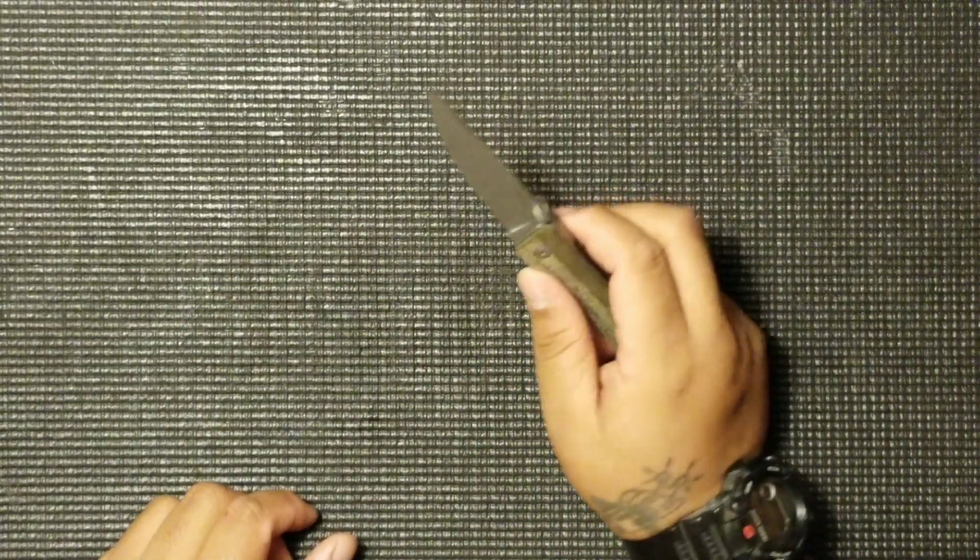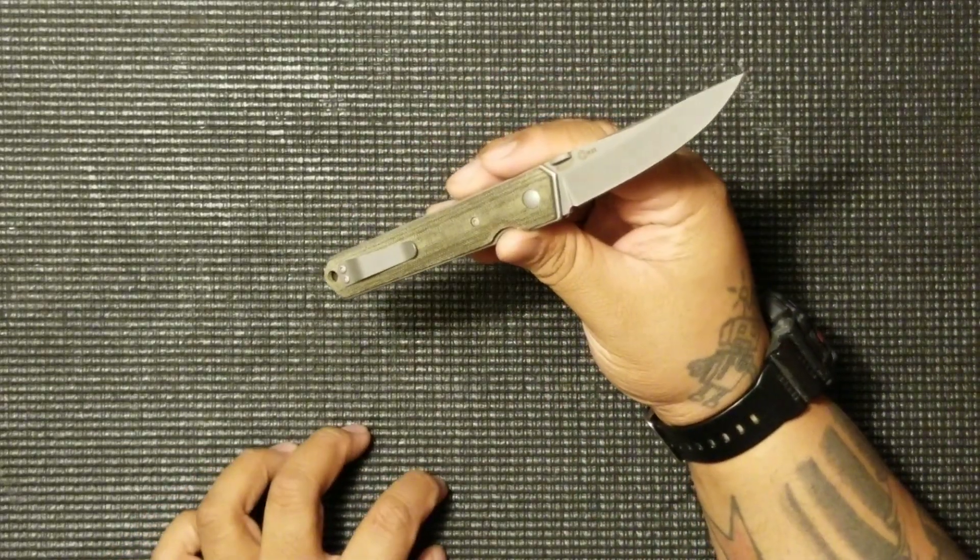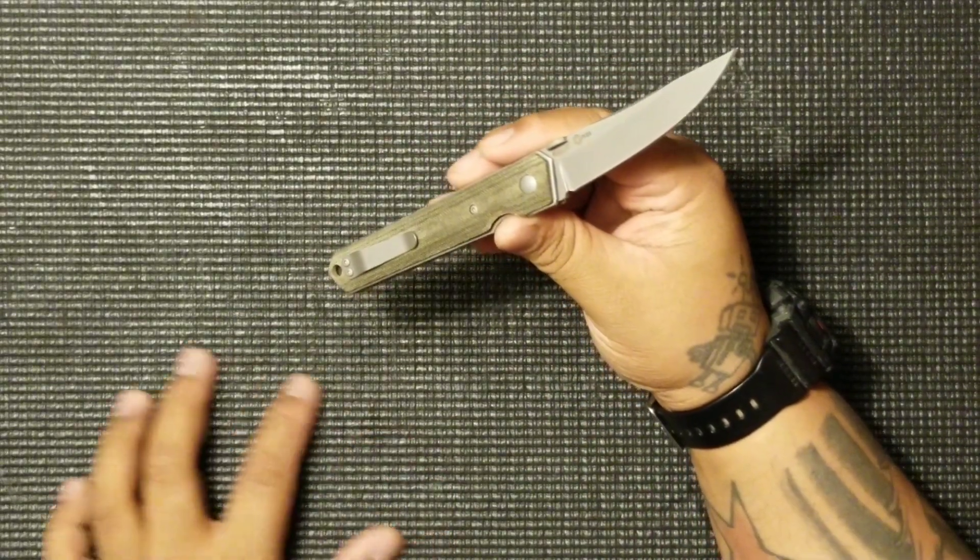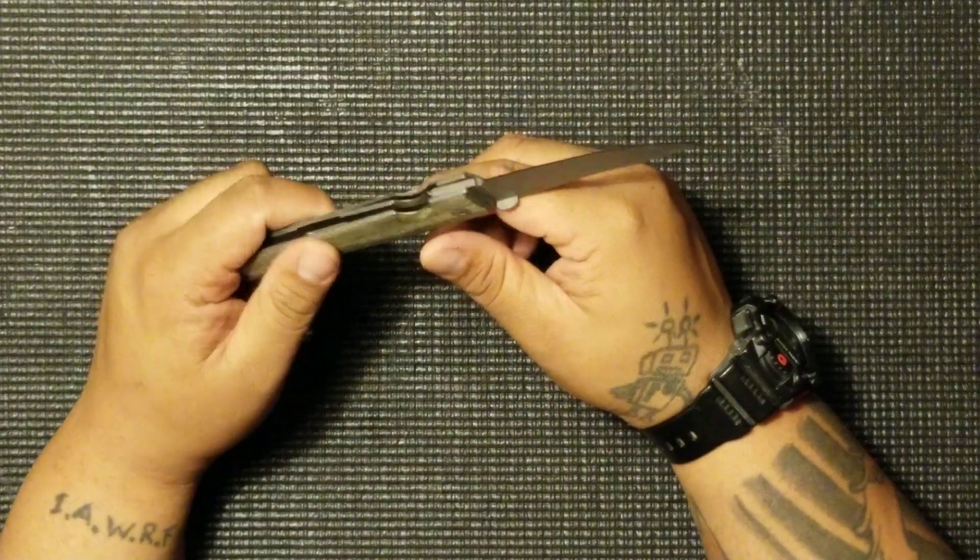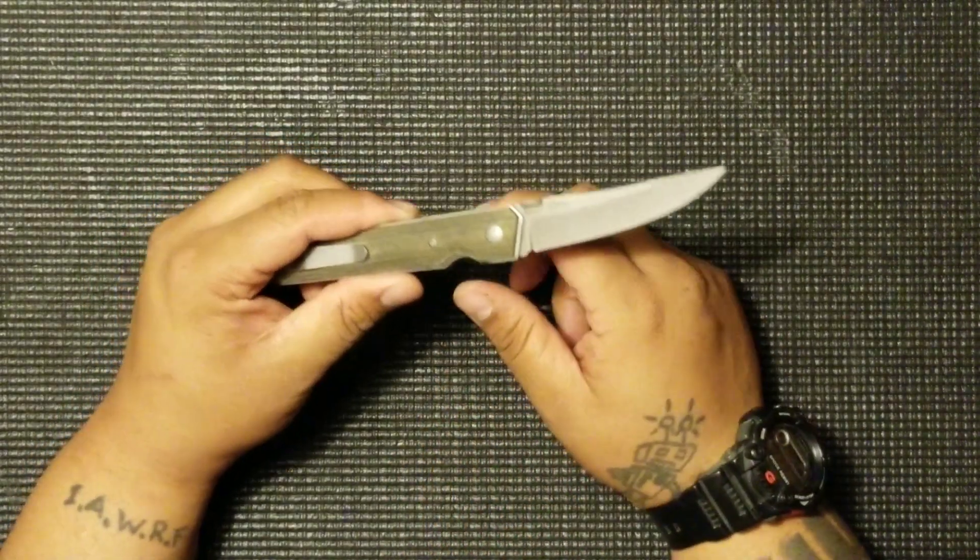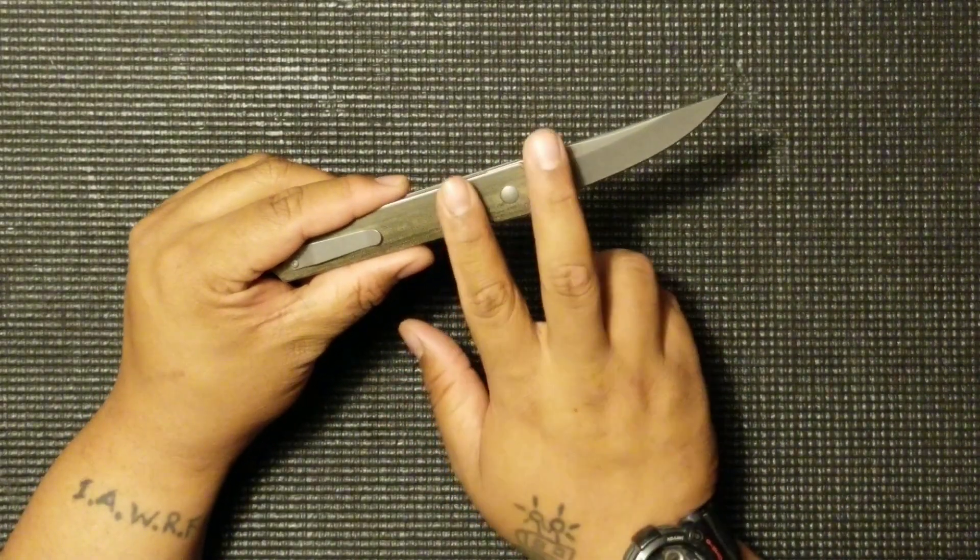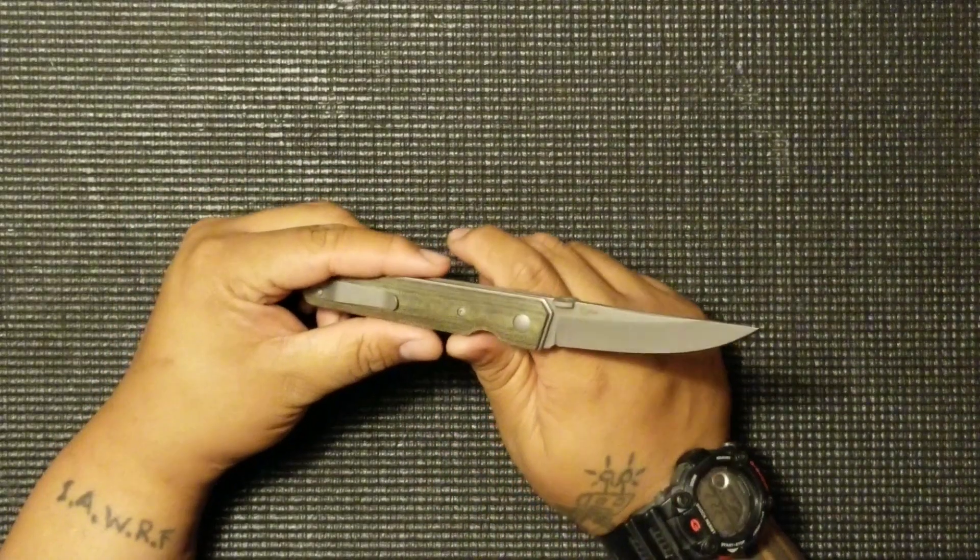But yeah, let me know down in the comments guys, what do you think about this knife and all the different variations that it comes with? Let me know what variation you guys have. The one that I probably would have liked a little better, there is a micarta one with a brass bolster. I might have liked that one a little better because of the brass bolster, that might have been cool.